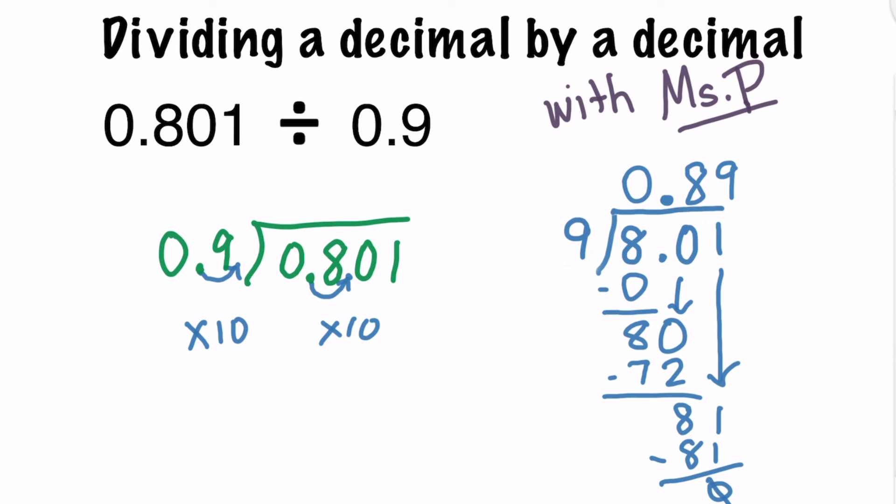That tells me that the answer to 801 thousandths divided by 9 tenths is 89 hundredths.